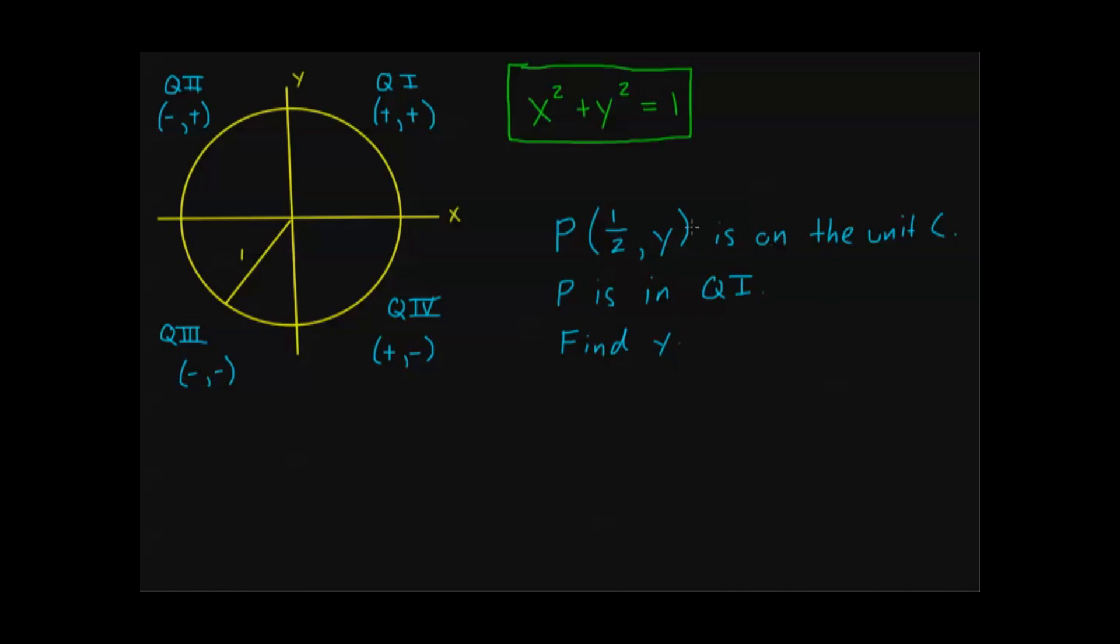This first piece of information, I know that p has an x-value of one-half, and I know that p is on the unit circle. So that means that p is going to satisfy my equation for the unit circle. So I can plug in this one-half for my x-value. That's going to be one-half squared. I don't know what y is, so I'm just going to leave it as y for now. And because it's on the unit circle, I already know that this equals one. I don't need to solve it out from the left, because I'm given already that it's on the unit circle.